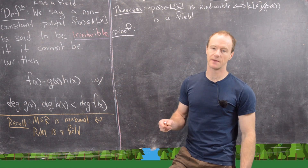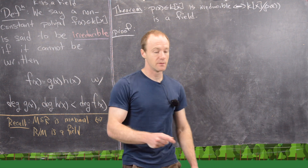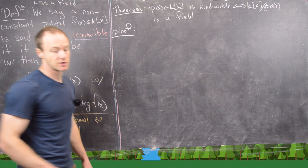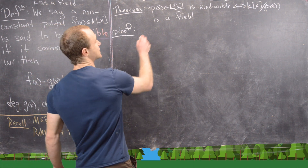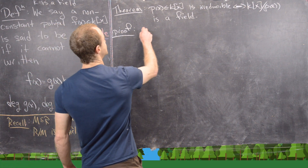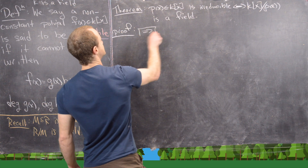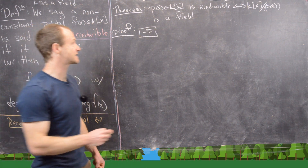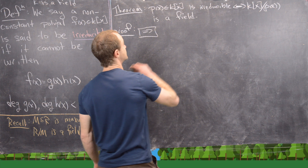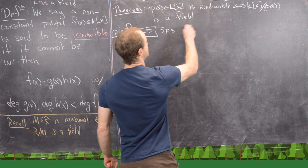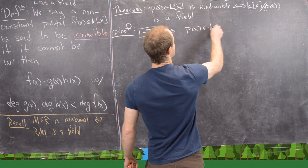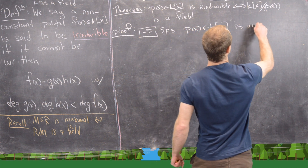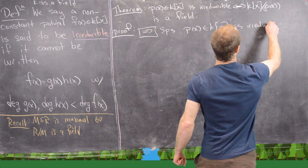I'll let you look up the definition of a maximal ideal, but we will use it along this proof. Now let's go ahead and do the forward direction. In other words, we want to suppose that p(x) is an irreducible polynomial. Suppose p(x) in k[x] is irreducible.